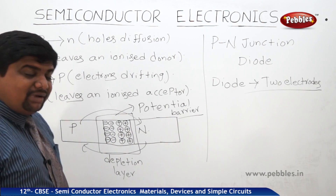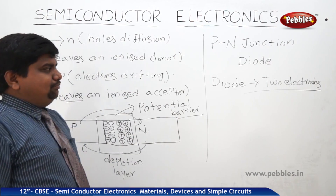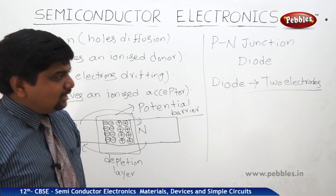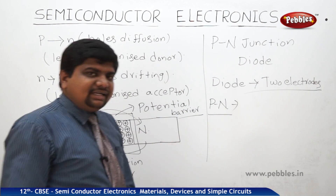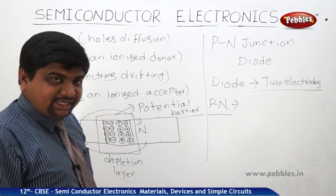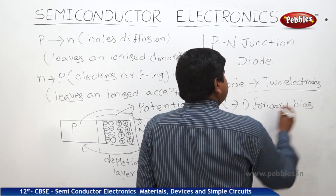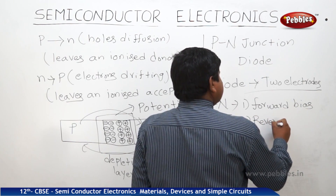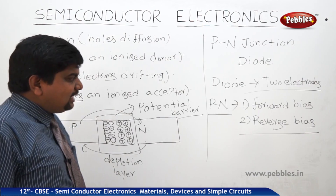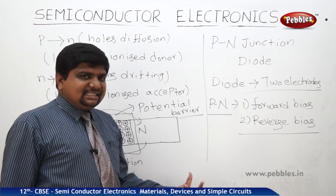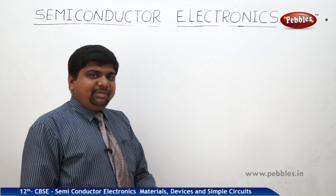If the PN junction is connected to a battery or power source, diffusion and drifting take place via the potential barrier. The PN junction diode can be connected in two different ways in a circuit: the first is forward bias and the second is reverse bias. We are going to discuss forward bias, reverse bias, and their graphs. This PN junction diode is also called a semiconductor diode.